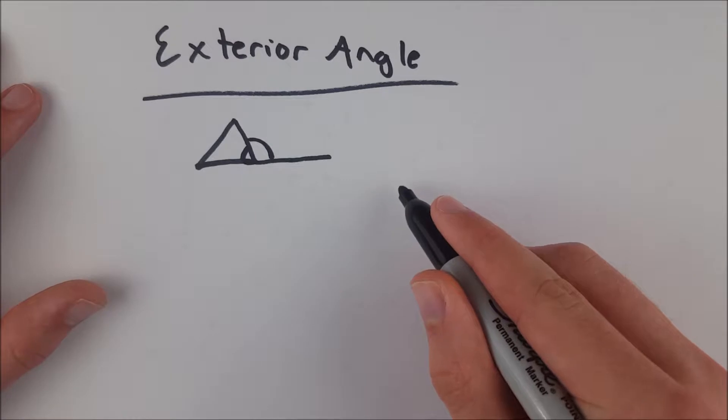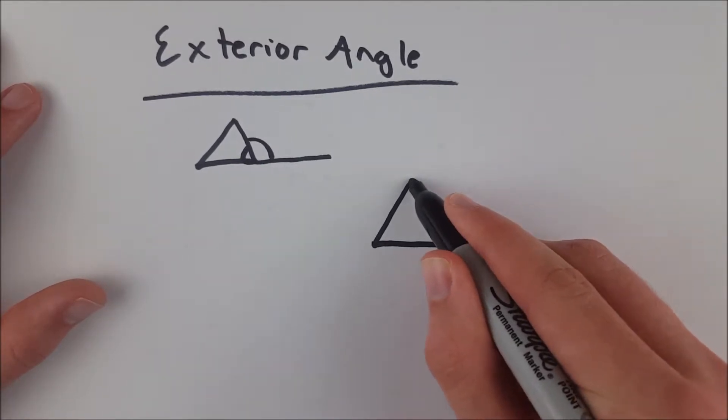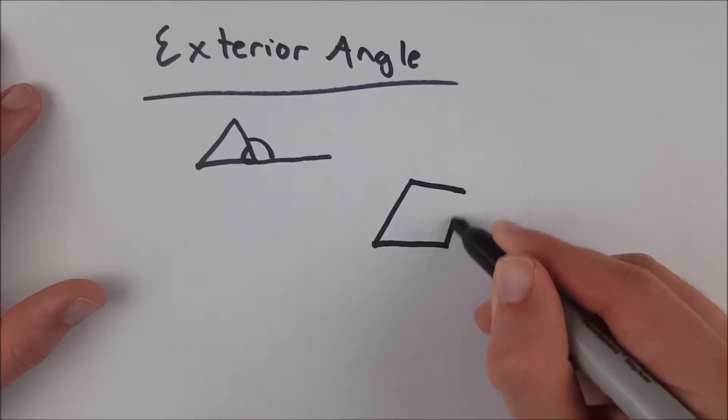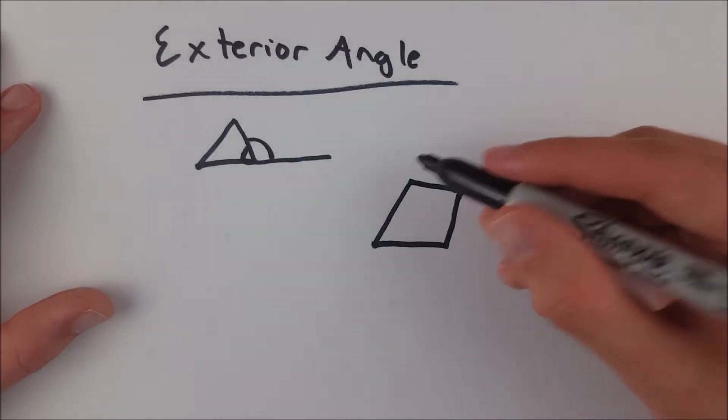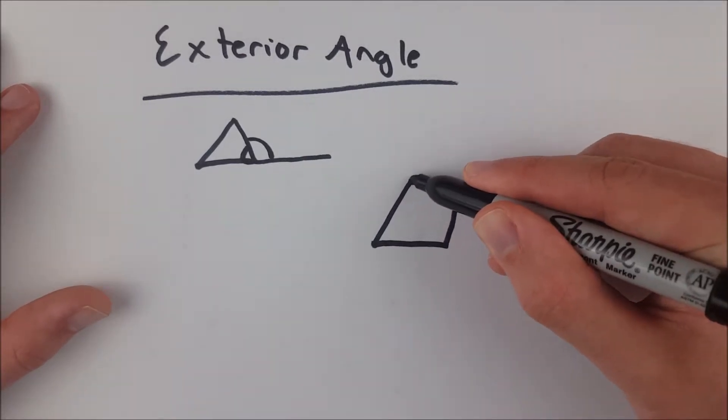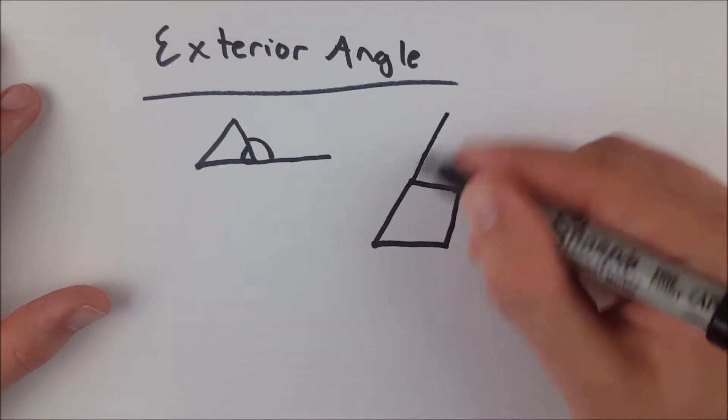If we look at some quadrilateral—I'm not going to say square, just because I know that I wouldn't be able to draw a super convincing square. This almost looks like a parallelogram, kind of looks ugly, because it almost looks like I was trying to draw a parallelogram—but let's say we extend this side. So we extend this side, and then here is our exterior angle.